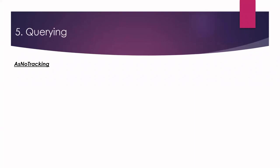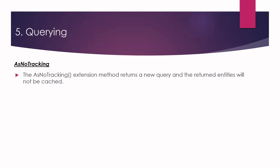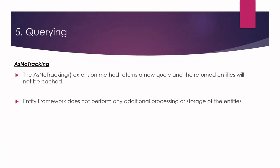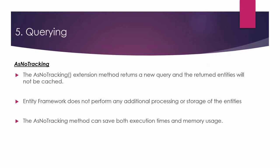Sometimes we don't want to track entities because the data is only used for viewing purposes and insert, update, or delete operations are not performed. The AsNoTracking extension method returns a new query where the returned entities will not be cached by the DbContext. This means EF does not perform any additional processing or storage for those entities, saving both execution time and memory usage, which improves performance when retrieving large amounts of data.